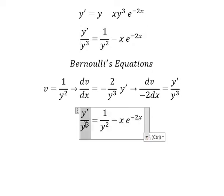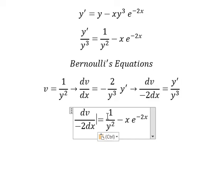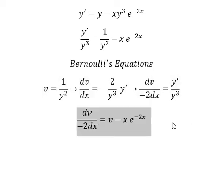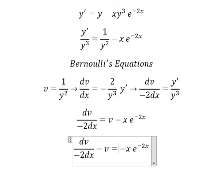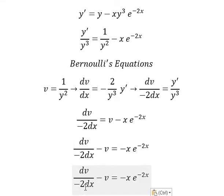So this one we change by this one and this one we change by v, so I will put v here. Next we multiply both sides by negative 2.